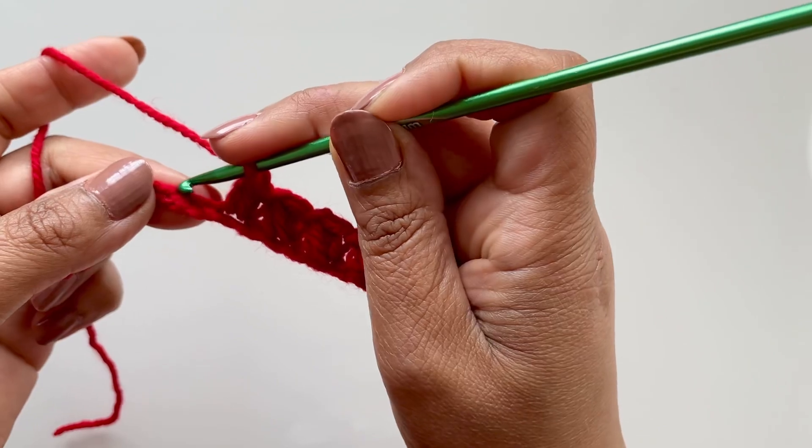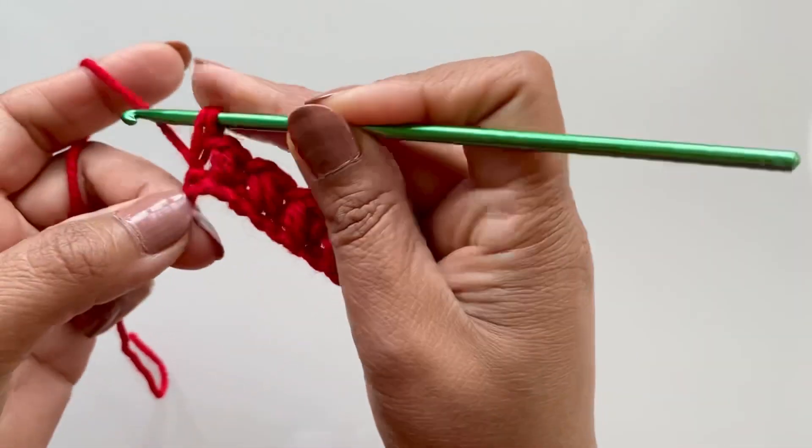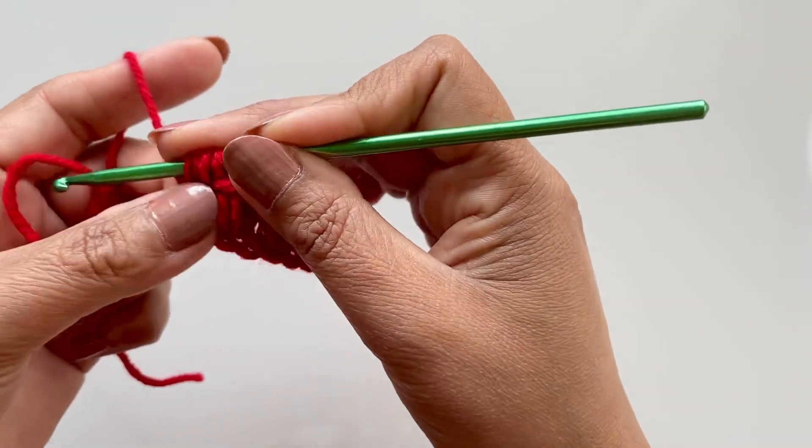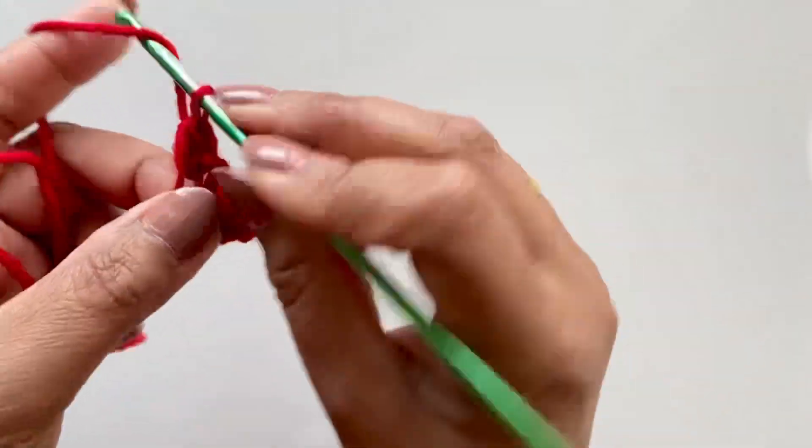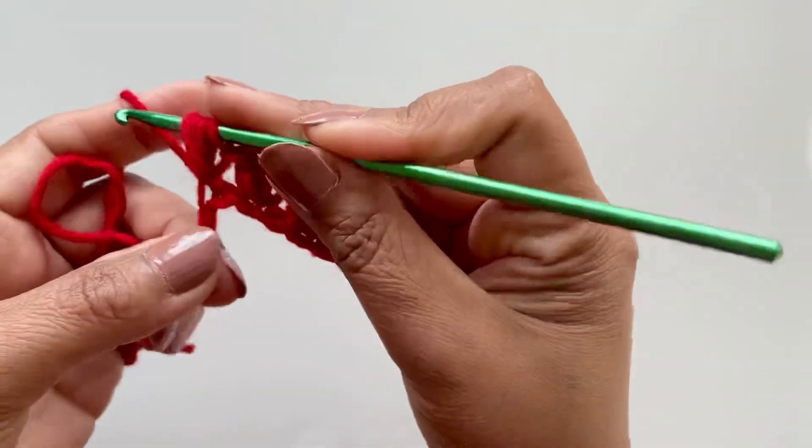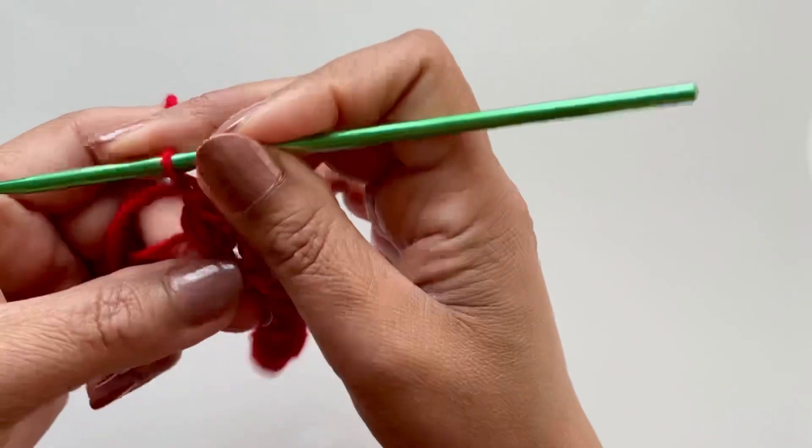Miss one, no yarning, go in, pull up a loop, yarn over, go through, pull another loop. 4 loops, pull through all 4, chain 1, miss the next one, and then same again.